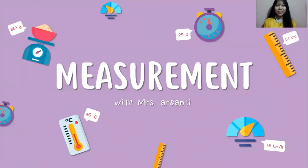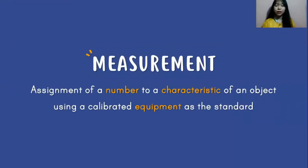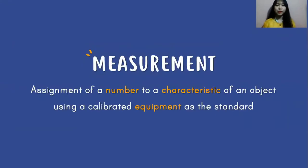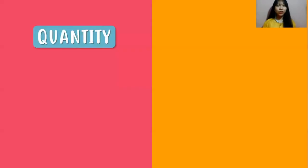Let's start with the definition of Measurement. Measurement is an assignment of a number to a characteristic of an object using a calibrated equipment as a standard. Or we could also say that measurement is a comparison of a quantity of a physical phenomenon with a standard unit. Now, we got two important things: the first one is quantity, and the second one is unit.